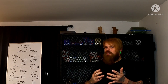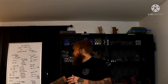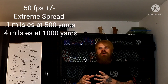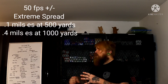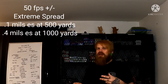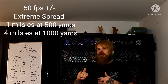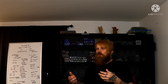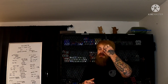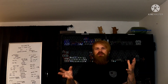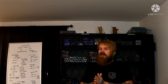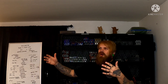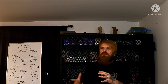This is where load development gets really important. At a 50 fps extreme spread, at 500 yards we're looking at an average of 0.1 mils difference on the low side. On the high side at 1000 yards we're looking at 0.4 mils of extreme spread — and a 0.4 mil difference at 1000 yards can determine a hit or miss. Most matches are won between 500 and 800 yards, not at the 1000-yard or 1200-yard stages.